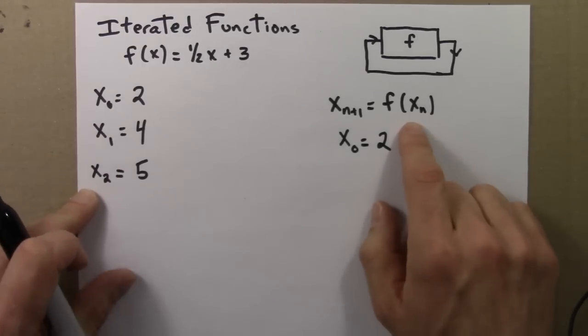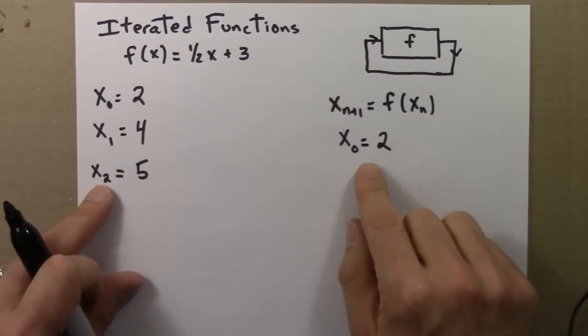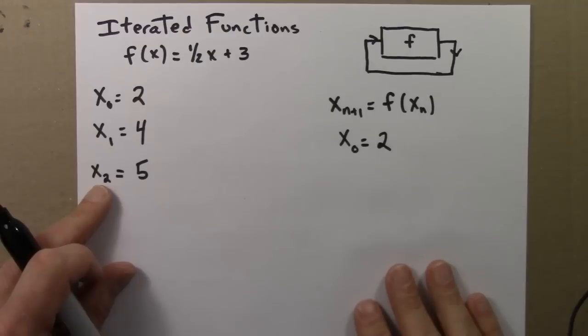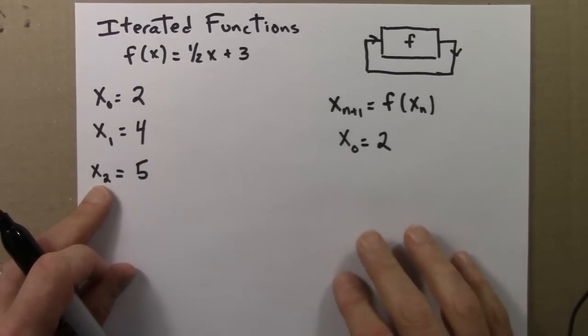So if I gave you this task - here's a function, here's a seed, find the orbit - you would be certain that that task is possible. There's no way that that could fail or that the question could be ill-posed.